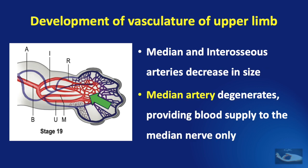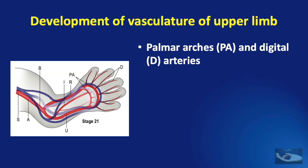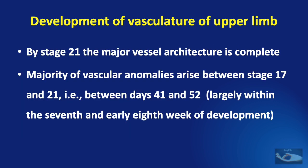With continued growth, the median and interosseous arteries decrease in size. The median artery degenerates, providing blood supply to the median nerve only in the completely grown fetus. Then the palmar arches and digital arteries develop. By Carnegie stage 21, the major vessel architecture of the developing upper limb is complete. The majority of vascular anomalies arise between stage 17 and 21, that is between days 41 and 52.